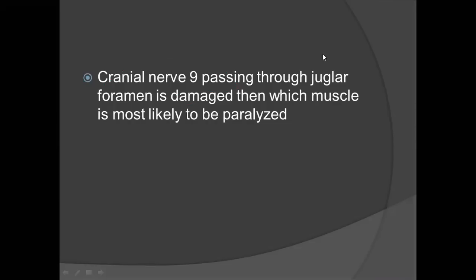Cranial nerve 9 passing through the jugular foramen is damaged — which muscle is most likely to be paralyzed? Cranial nerve 9 supplies only one muscle: the stylopharyngeus. So the answer is stylopharyngeus.